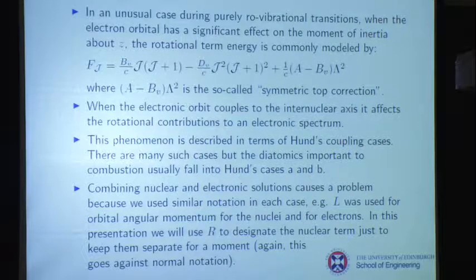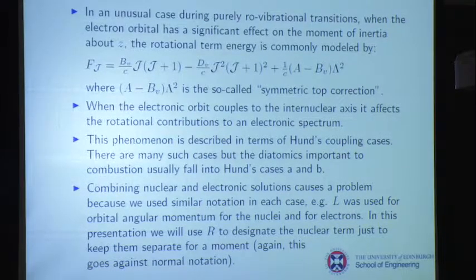I'm going to depart from that convention and use R to designate the nuclear term, so you can see the difference between R and L. In Hund's Case A, we assume there's an interaction between the nuclear rotation and the electronic angular momentum, but it's very weak. The nuclear rotation is represented by R. Omega represents the electronic contribution — remember, omega is lambda plus sigma sub s, representing the electronic orbital angular momentum along z plus the spin momentum along z.